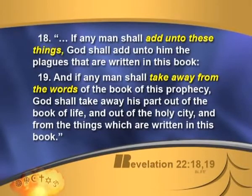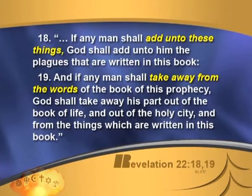This chiastic style could in no way have been calculated by man. It makes even more sense now why Revelation has such a stern warning: 'If any man add unto these things, God shall add unto him the plagues written in this book. And if any man shall take away from the words of this book of prophecy, God shall take away his part out of the book of life.' If you were to take one word or verse out of Revelation, the chiasm would no longer make sense.